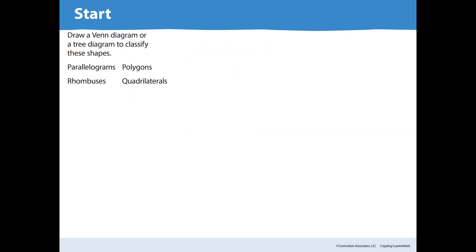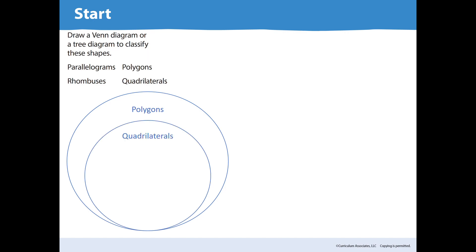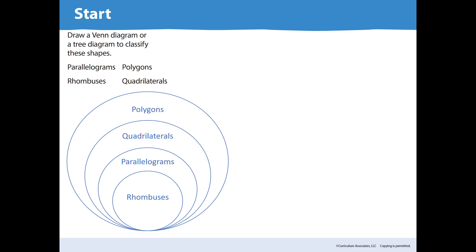I'm going to start with the Venn diagram. The most general of those terms is polygons, because all the others fit inside of polygons — they're all examples of polygons. Next we have quadrilaterals, which are a type of polygon. Then parallelograms are more specific than that; all parallelograms are quadrilaterals because all parallelograms have four sides. Parallelograms are shapes that have two pairs of parallel sides. And then finally, rhombuses fit in all of those categories — rhombuses are polygons with four sides, two pairs of parallel sides, and all sides are equal length.